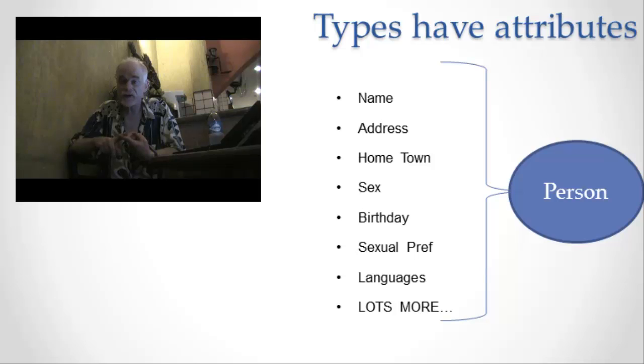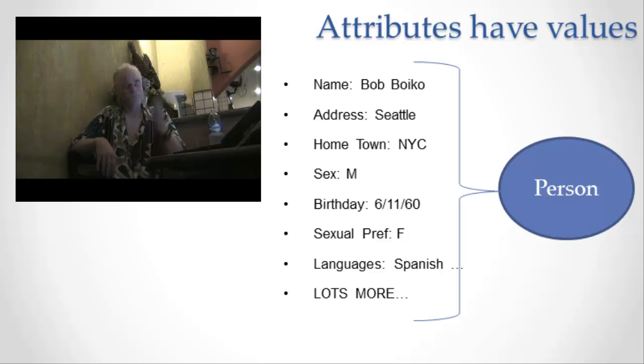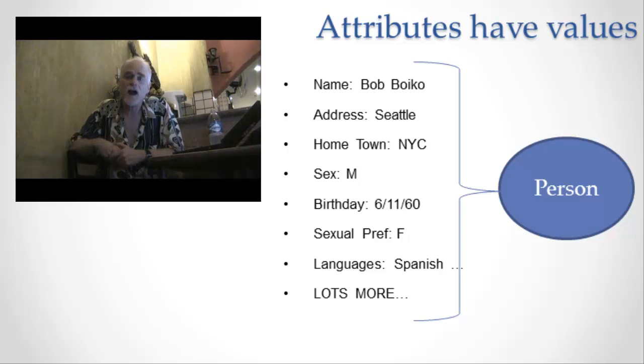Concept number one: information type. Concept number two: types have attributes. Concept number three: attributes have values. The attribute is name. The value is Bob Boyko. That value has a certain form. I can't type one, two, three, four, five, six in the name because that's not a name. That's a number. Instead, I have to type a name. Or birth date can't be Bob Boyko. It has to be a date.